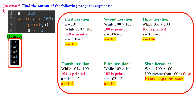First iteration: Since a=110 is greater than 100, the loop body executes. The value 110 is printed, then a is decremented by 2 (a -= 2), making a=108. Second iteration: a=108 is still greater than 100, so the loop body executes again. The value 108 is printed, a is decremented by 2 again making a=106, and the loop continues.